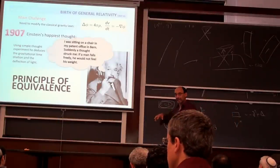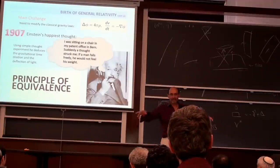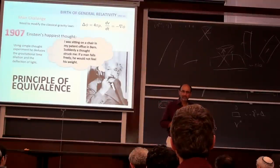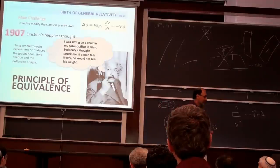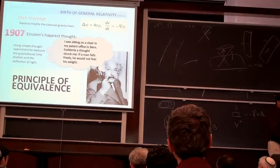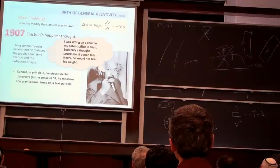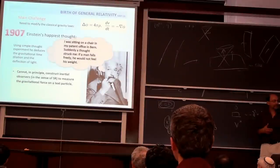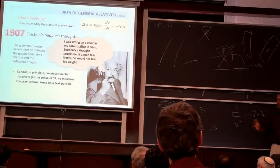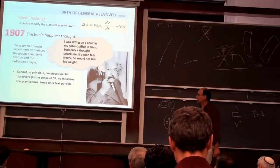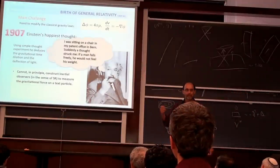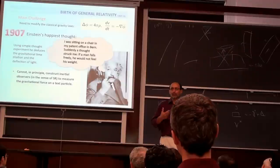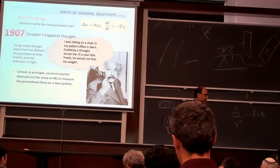Einstein imagined being in an elevator that is falling freely — everything falls the same way — and there is no way, even in principle, to construct inertial observers in the sense of special relativity to measure the gravitational force on a test particle, for the simple reason that gravitation would also have to influence the observer. You cannot set up an observer free from any gravitational influence.